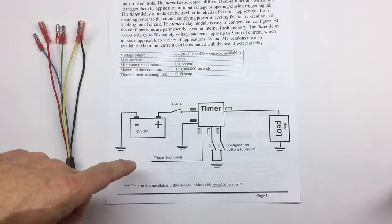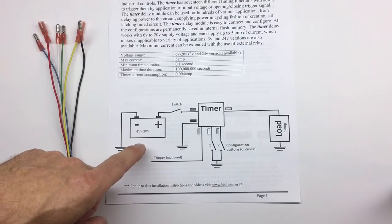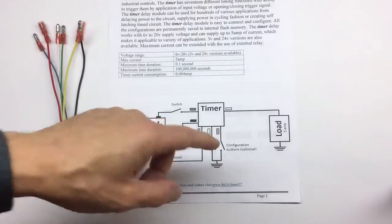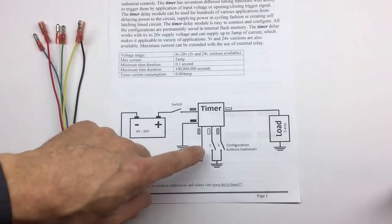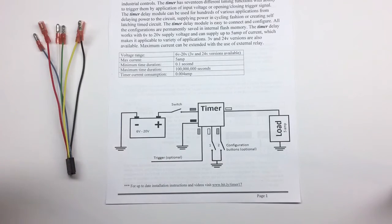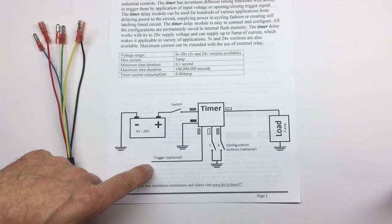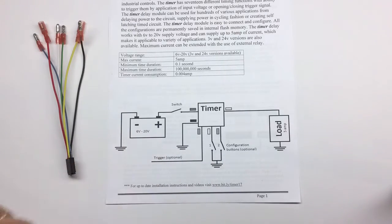Here we have the timer connected to the power supply and to the load, and configuration wires also connected to the timer to configure it. The trigger wire will not be connected in this exercise.